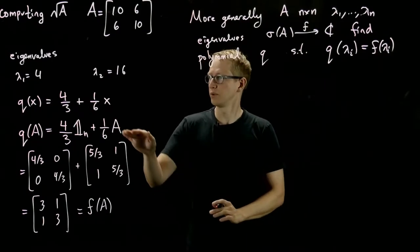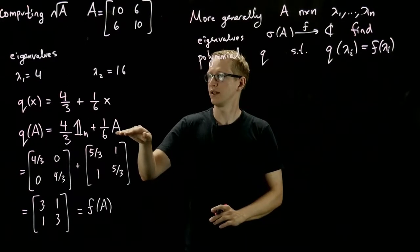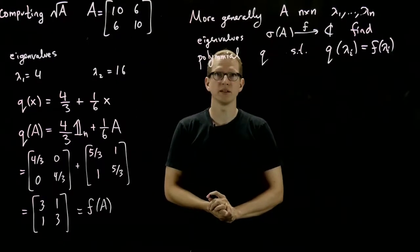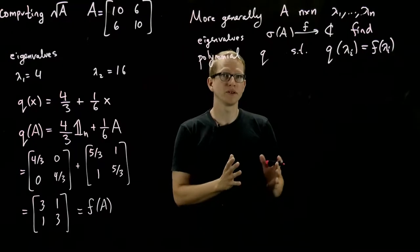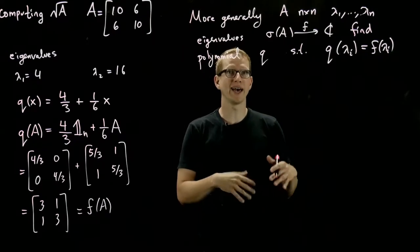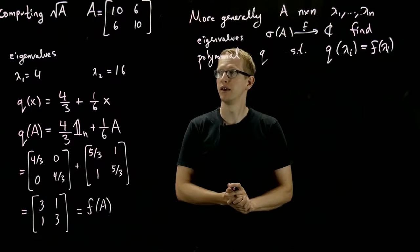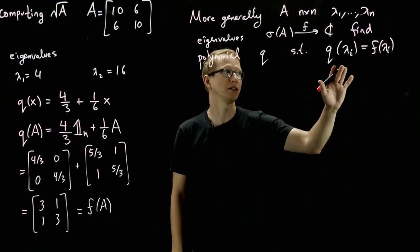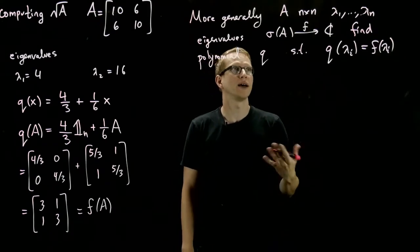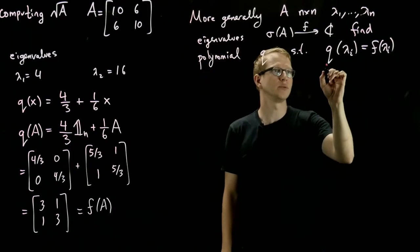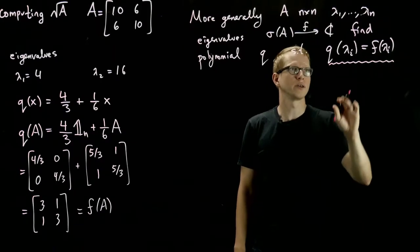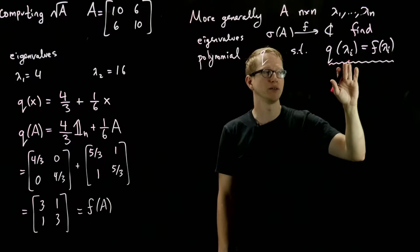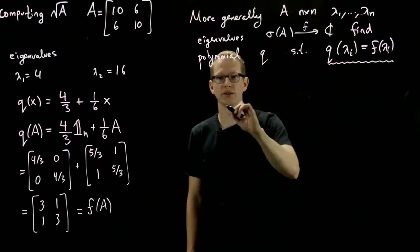And in fact, when we look at the degree of this polynomial, we notice that it was matching the size of our matrix. And that's going to be true in general. We'll be able to find a polynomial whose degree is at most the size of the matrix that will solve that problem, namely Q of A equals F of A. And why that happens is precisely because there are going to be, at most, n distinct eigenvalues.